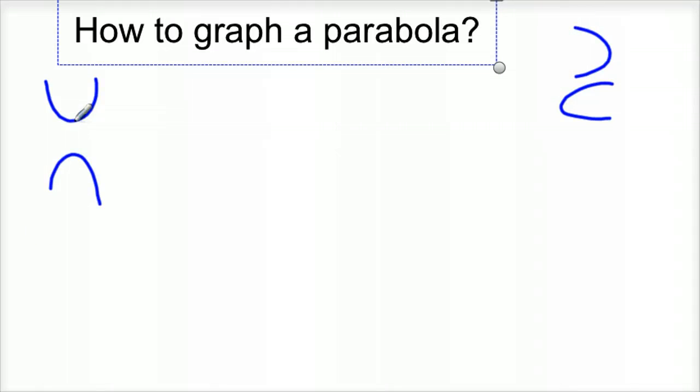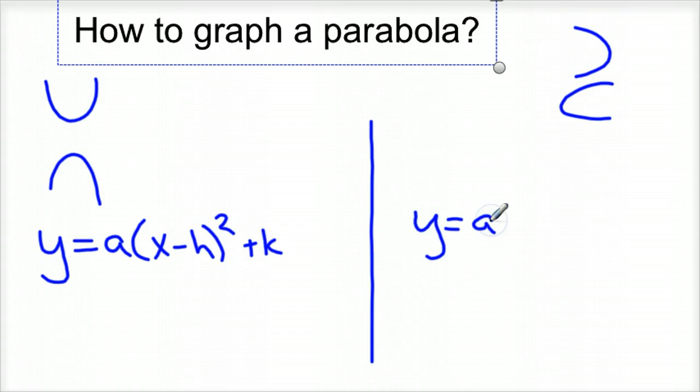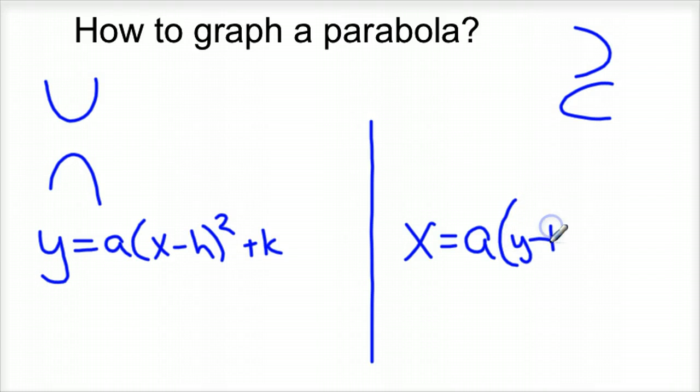These have an equation that looks like this: y equals a times (x minus h) squared plus k. The opening up and down ones. The ones that open right or left have the equation x equals a times (y minus k) squared plus h.